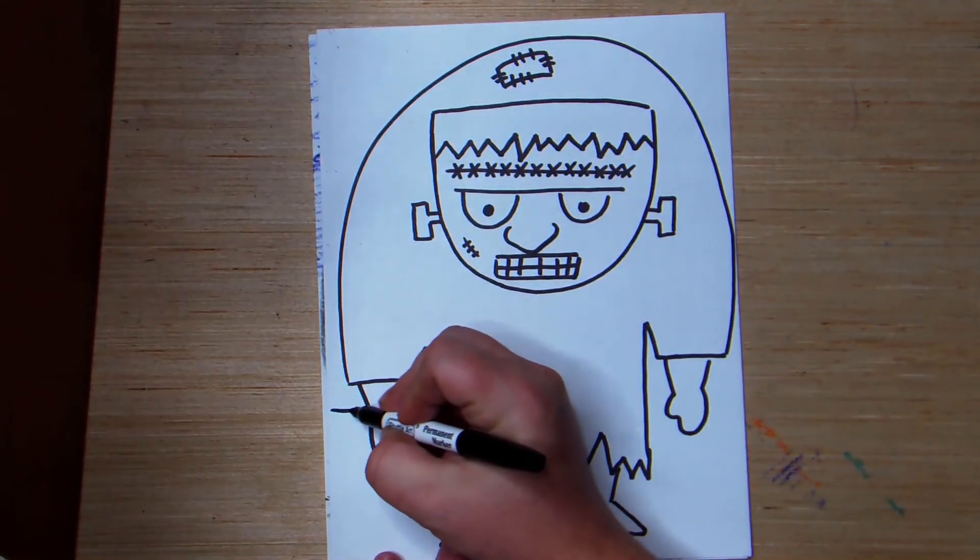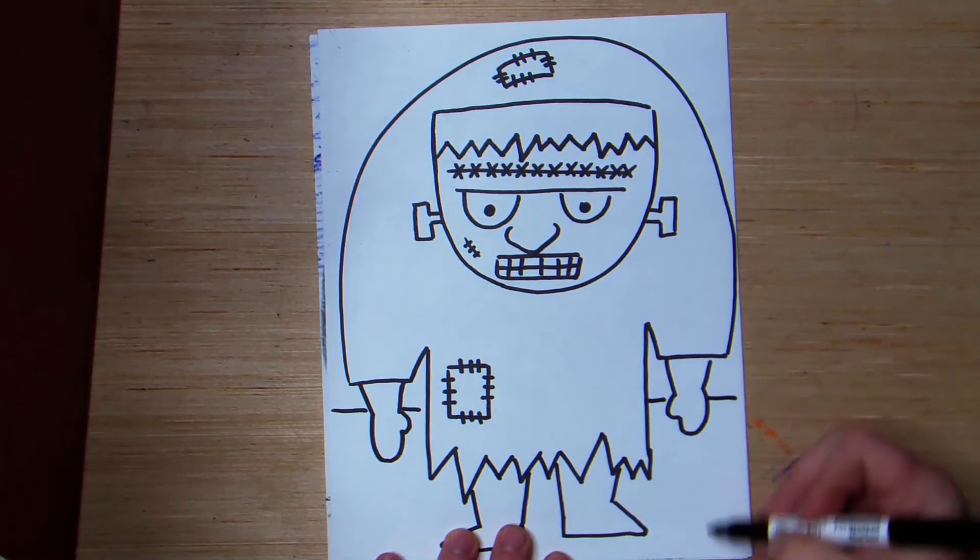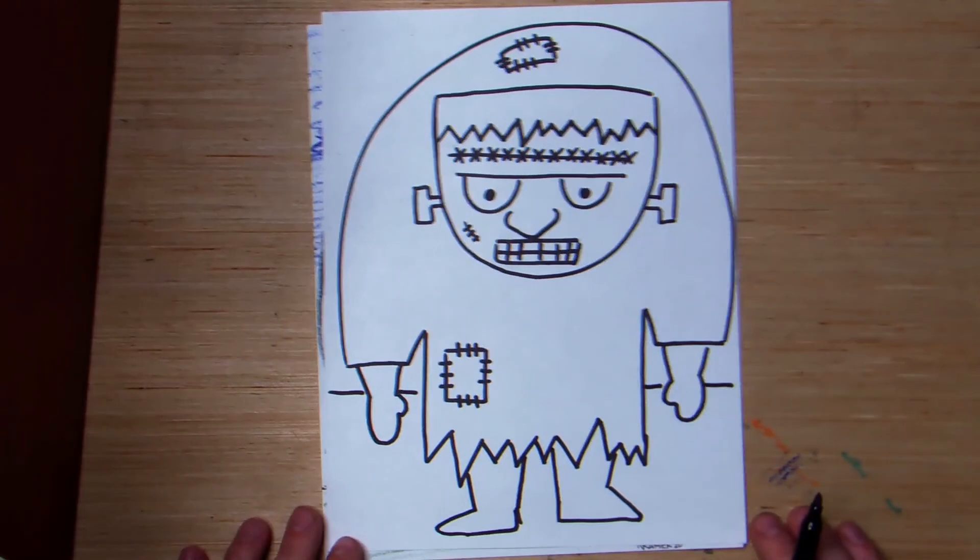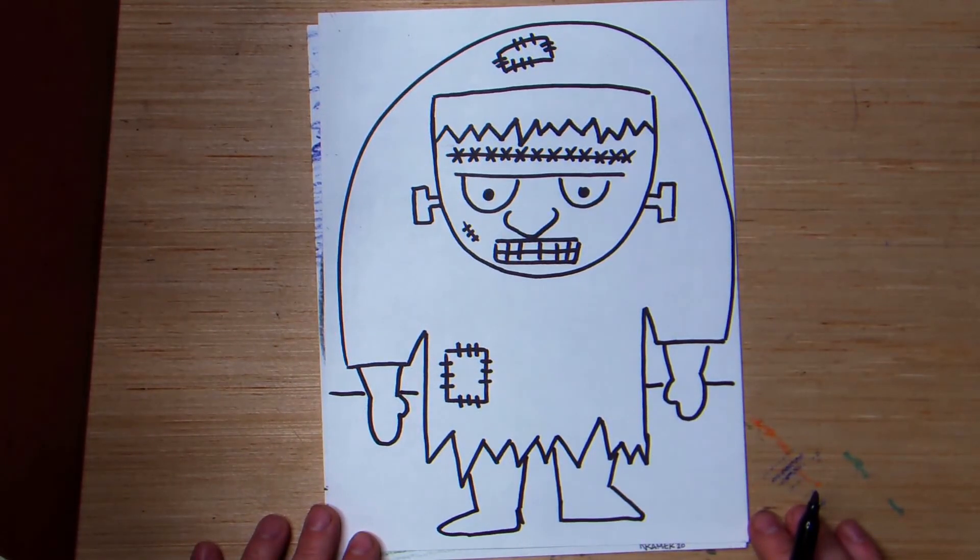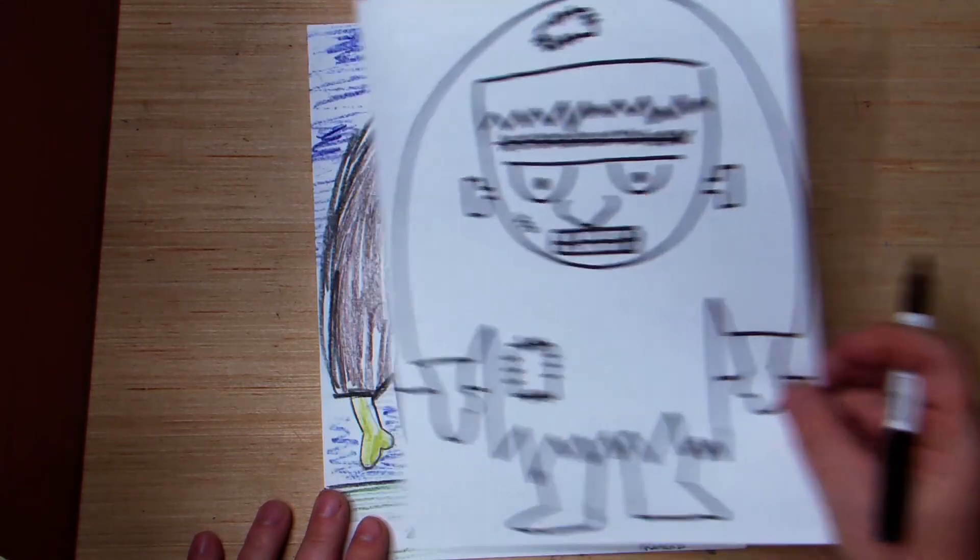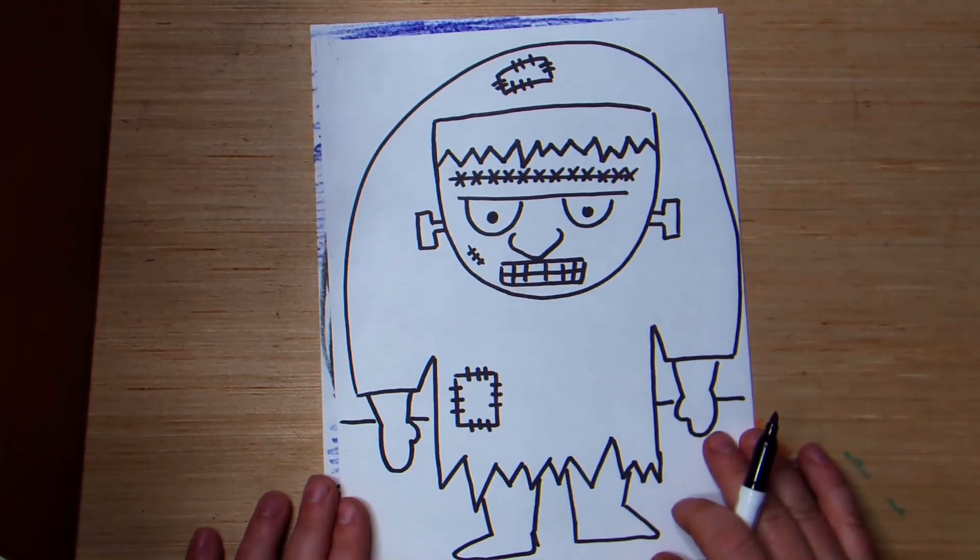I might just add a little line here to separate the ground from the sky. Gives my drawing a little bit of depth. And there you go. There's Frankenstein. Now, I can add some color to this. Make it look a little bit more like this one. But, you can do that on your own.